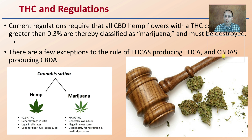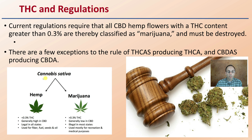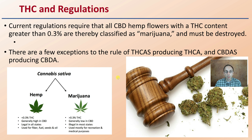Regarding THC and regulations: current regulations require that all CBD hemp flowers with a THC content greater than 0.3% are classified as marijuana and must be destroyed. There are a few exceptions, but essentially hemp is equal to or less than 0.3% THC, while marijuana is greater than 0.3% THC — with THC being the molecule that causes that categorization of the plant material.